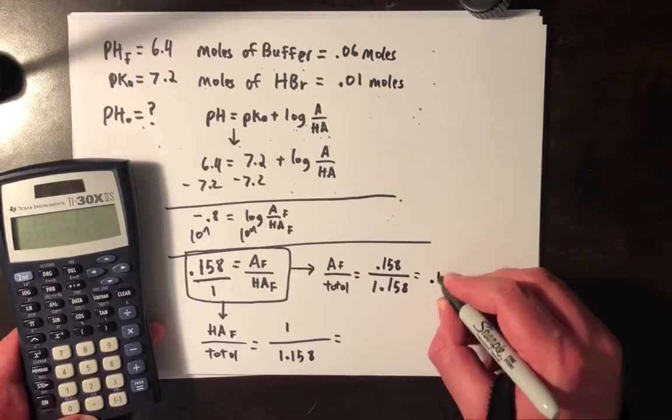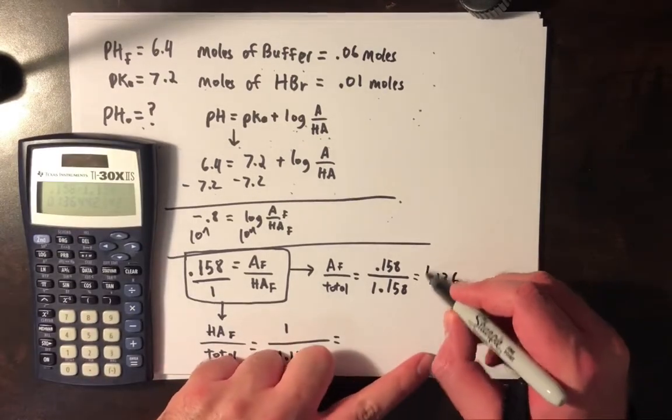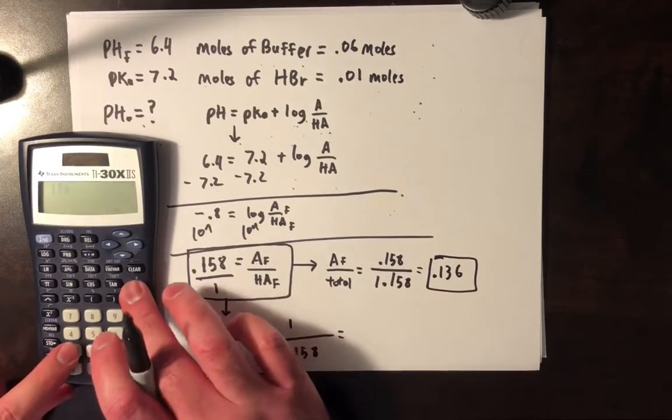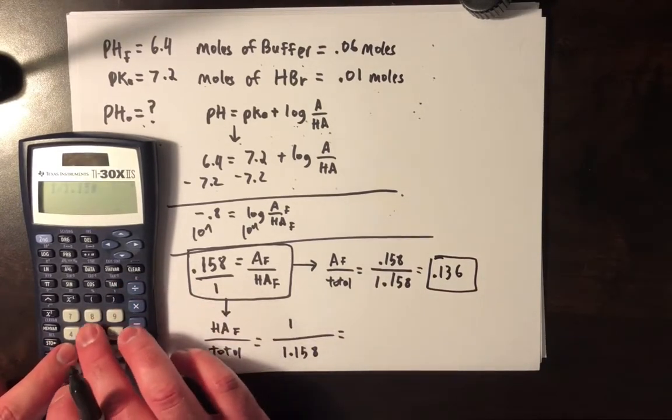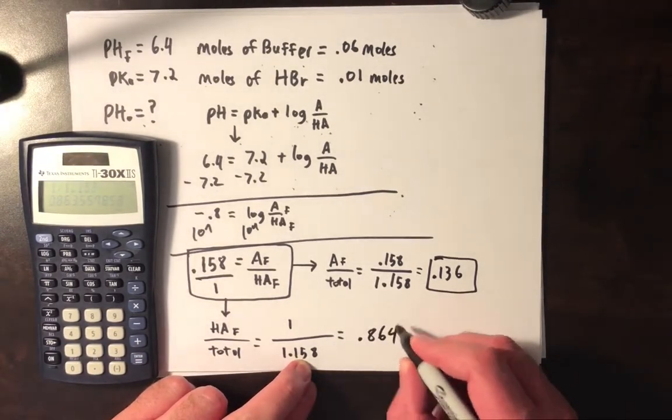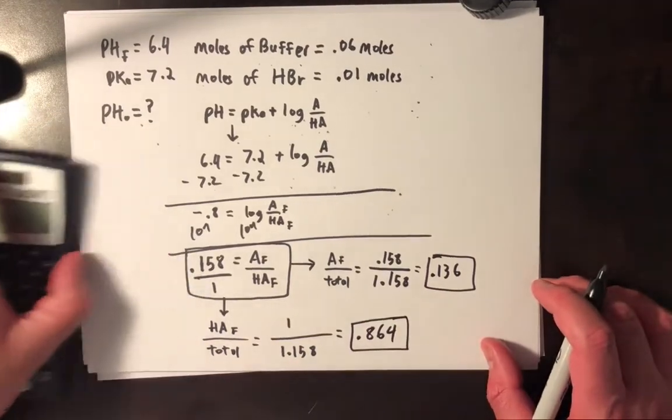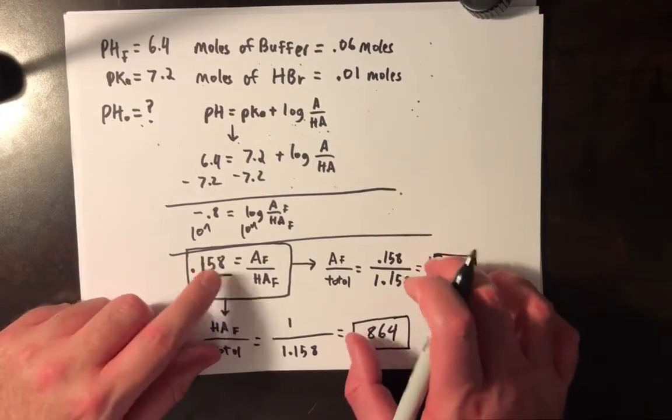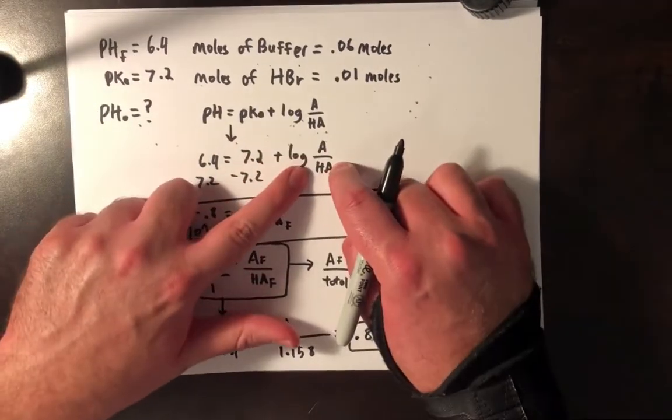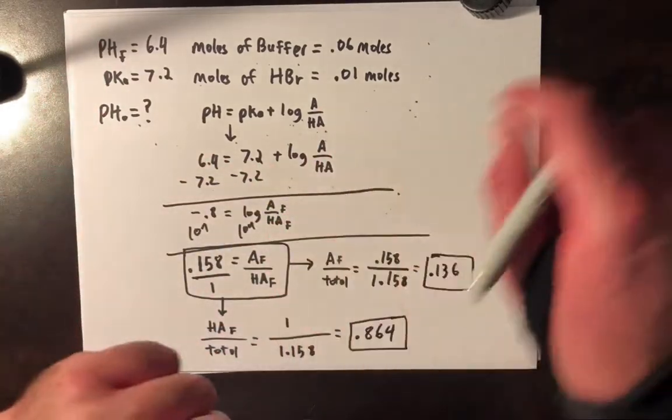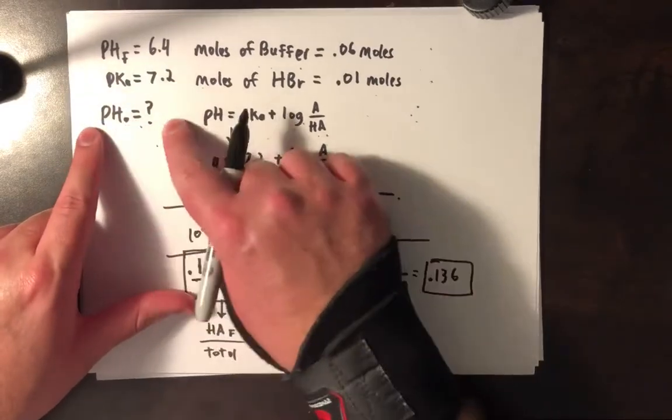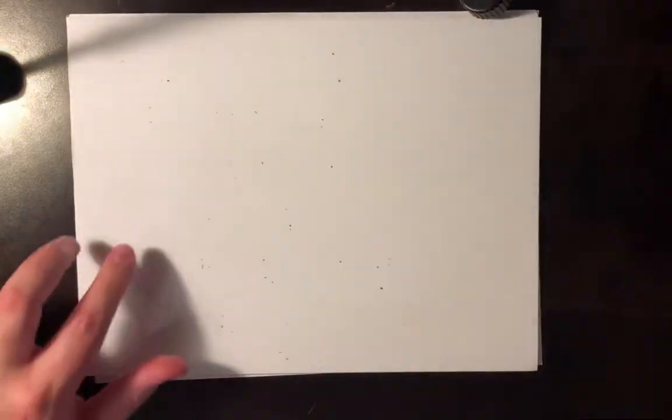And I get 0.136 as my ratio of A⁻ to total. And then for my ratio of HA⁻ to total, that's 1 divided by 1.158. This is 0.864. Again, these are just rounded values here. Okay, so these are probably some useful ways of looking at the relationship of, or just the ratio of A⁻ to HA. And I think from that, we can deduce the change. And if we know the change, we can figure out the initial value of this, which will help us figure out the initial value for the pH. So I'm just going to move this up here. This is a long video, so I hope you do that as well.